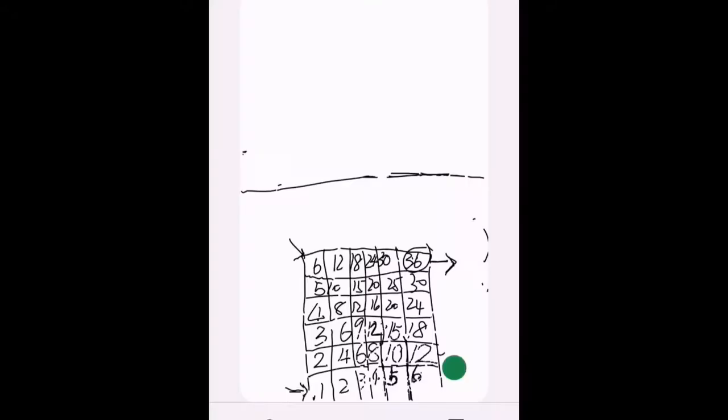Now, let's begin. Today, let's discuss a harder problem. There is a grid of 6 times 6 and the score is indicated on each grid. What we need to do is find a path that has the highest score starting from the leftmost corner which is 1 and ends with the highest corner which is 36.